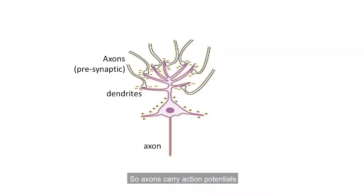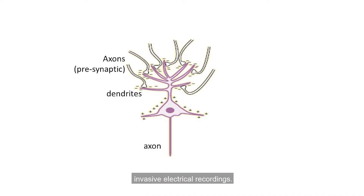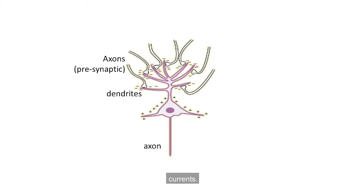Axons carry action potentials towards other neurons. Although certain methods are sensitive to these action potentials — for instance, invasive electrical recordings — the human EEG signal is based mainly on dendritic currents.